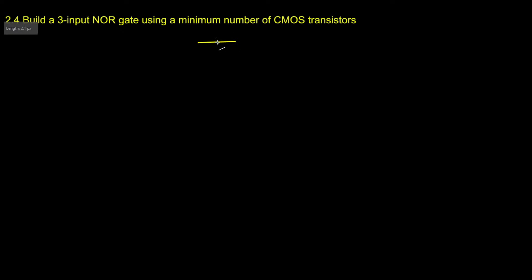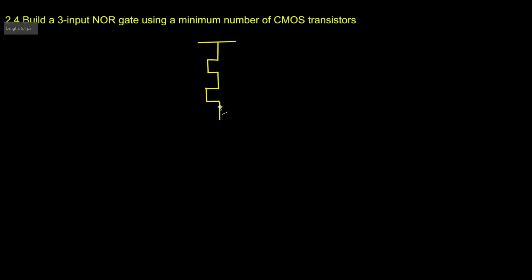We are going to have 3 PMOS in series, and we can prove that using a truth table. We are designing a NOR gate and we can analyze the behavior of this circuit using PMOS and NMOS in a truth table and see if it matches the NOR gate truth table.